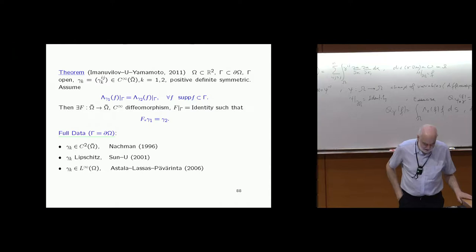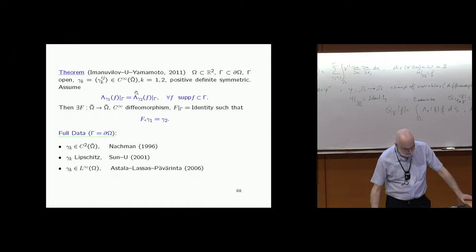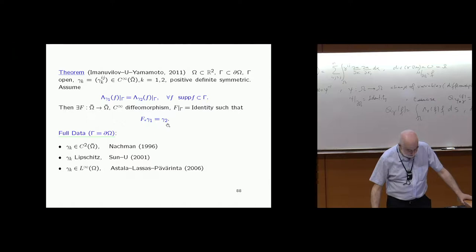Let me tell you what's known. In dimension two, we know a lot. Even in the partial data problem, for a positive definite symmetric matrix with the Dirichlet-to-Neumann map restricted to a subset — for every function supported there — there exists a diffeomorphism so that one matrix is the push-forward of the other. The full data case was known for different regularities, and the final result is for L-infinity conductivity.